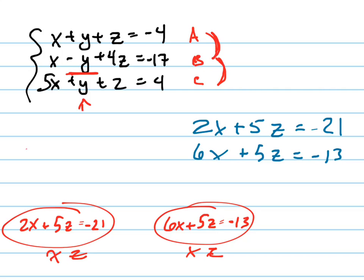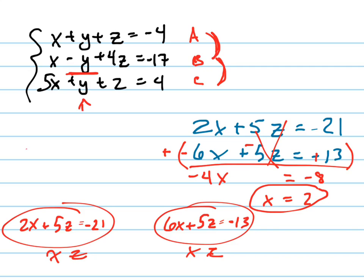Be smart about what variable to eliminate, what variable is easier to eliminate. The Z, and I do that by multiplying one of them by negative 1. So I get negative, negative, positive. Now I add them straight down. I get negative 4X. The Z's go away. Equals negative 8, which means X equals positive 2.